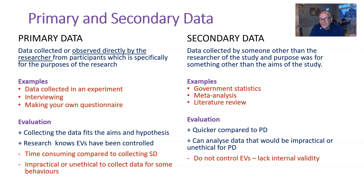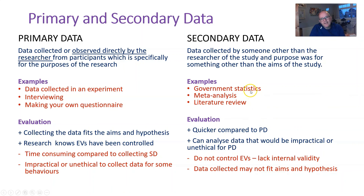The problem with secondary data is that it doesn't control extraneous variables, so you don't know if the data you're getting is valid because you haven't collected it yourself. Also, it might not fit your aims — the original researchers may have been doing something different. Notice that the strengths of primary data are the weaknesses of secondary data, and vice versa. So really, you just need to remember four evaluation points and you've got them all. In the exam, questions on this are quite rare, but they might come up.